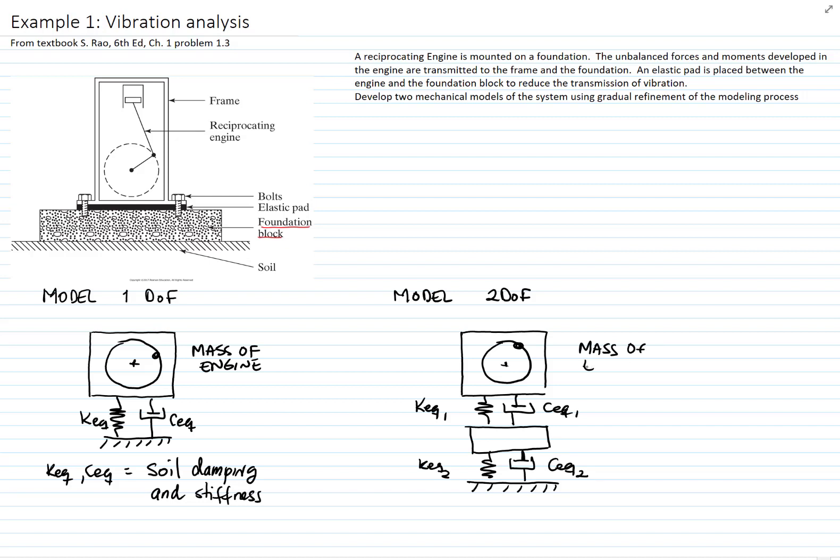Here we have the mass of the engine and that includes all the components that are between the mass and the foundation, which are bolts and, for example, the elastic pad.